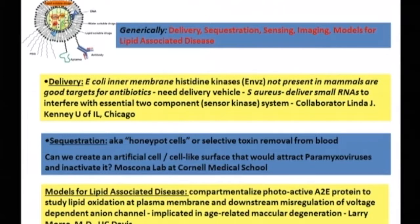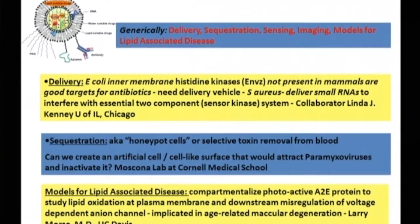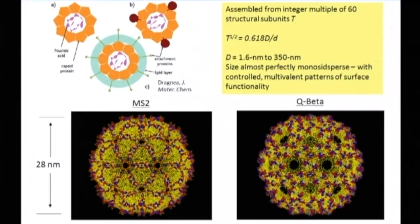A second type of protocell is the honeypot cell, named for obvious reasons — it's designed to be a kind of nanoscale flypaper. It soaks up viruses or bacteria by being coated with specific surface receptors. I'll talk about an antiviral application being developed in our consortium at Cornell University Medical School. A third application is compartmentalization of protein to understand lipid oxidation of plasma membranes, which is believed to be associated with macular degeneration.